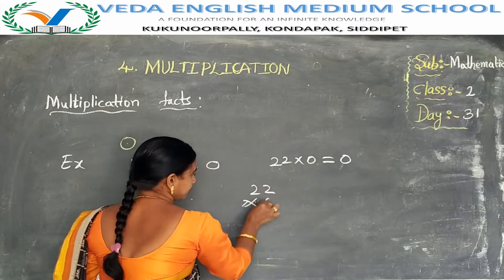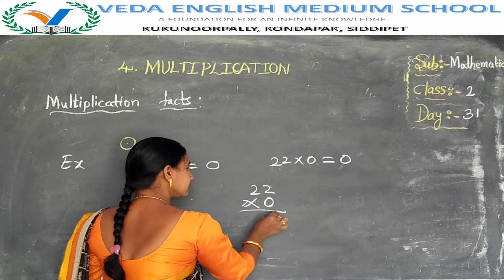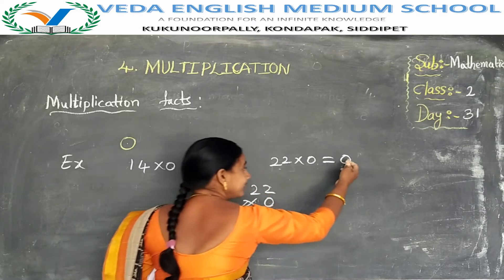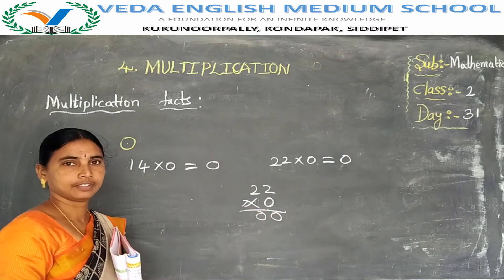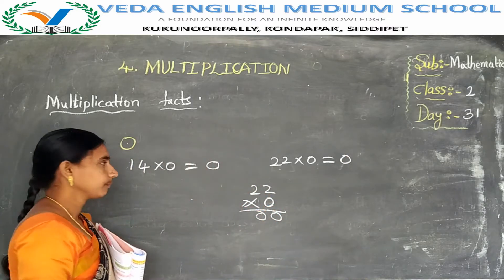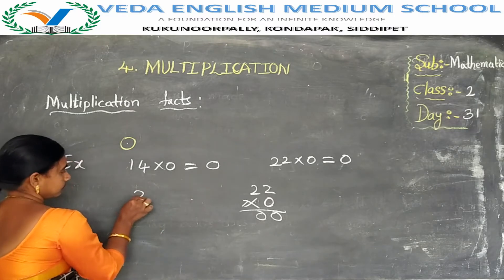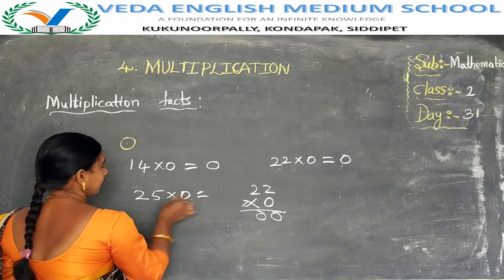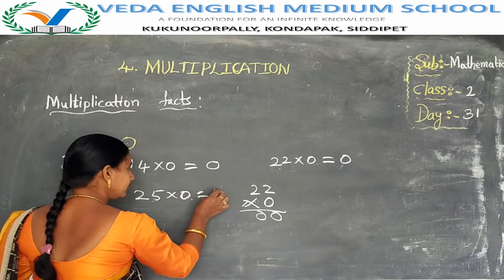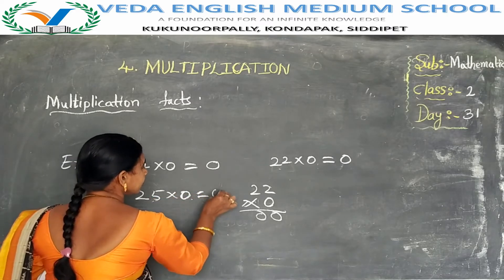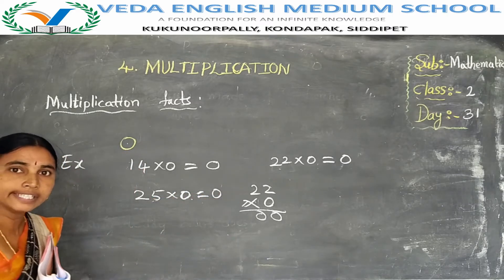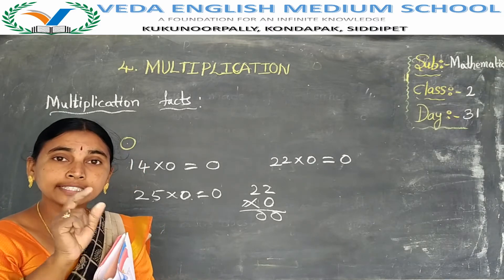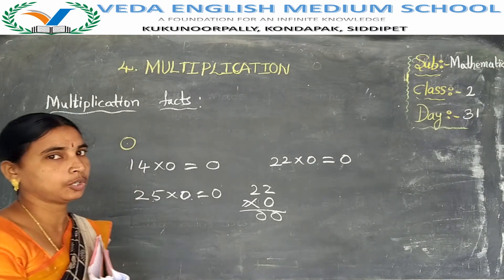22 into 0: 0 twos are 0, so the answer is always 0. Also, 25 into 0 is 0 — 25 zeros are 0. When a number is multiplied by 0, the answer is always 0.